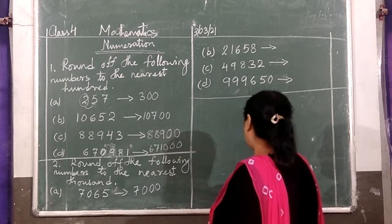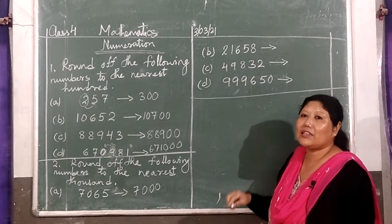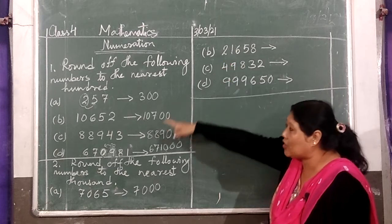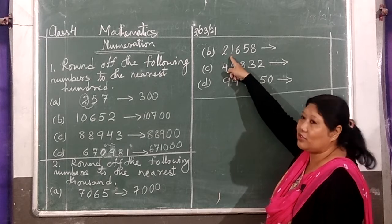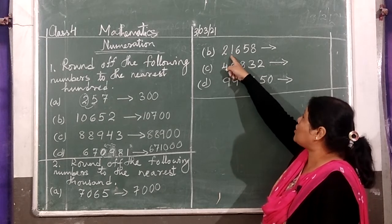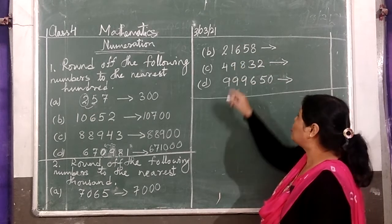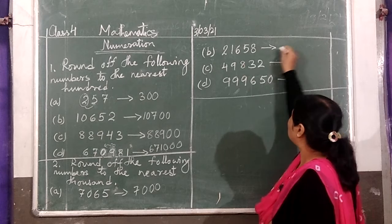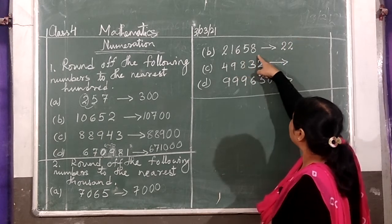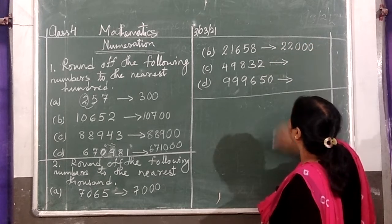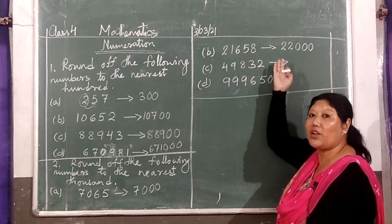Next question — you have to look at the 1000s place. The number in the 1000s place is 1. This will change — yes, because the number in the 100s space is more than 5. So it will change, becoming 2. And the digits after it become 0, 0, 0. So instead of 21,658, it became 22,000.